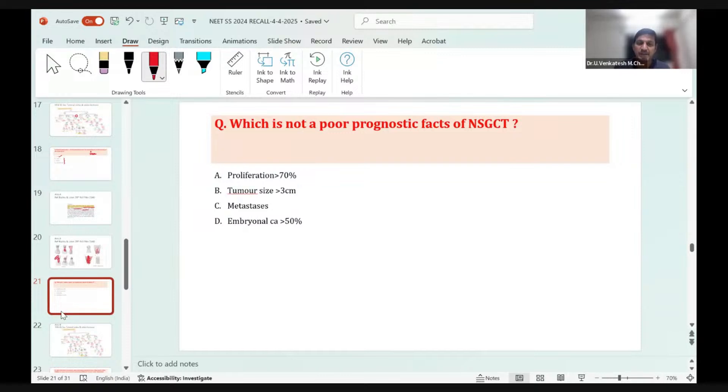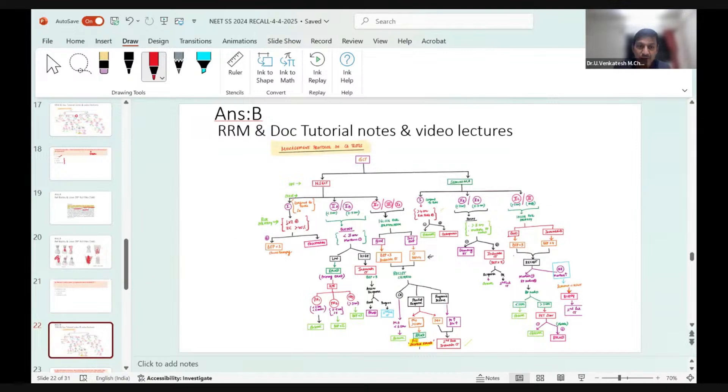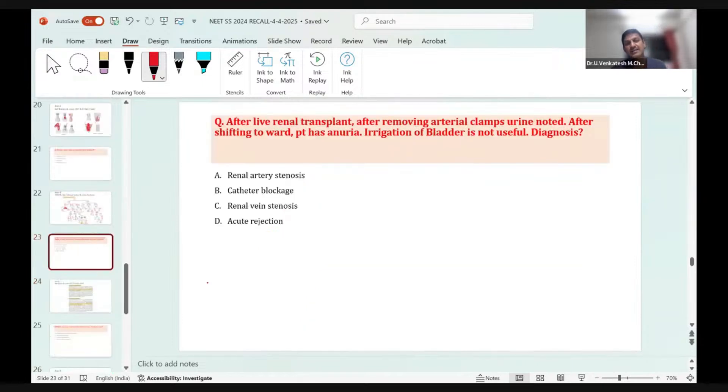Which of the following is not a poor prognostic factor for non-seminomatous germ cell tumor? Options: proliferation more than 70%, tumor size more than 3 centimeters, presence of metastasis, and embryonal component more than 50%. I didn't get a direct reference but taught this in class. In T stage of testicular tumor, the stage doesn't depend on the size of the primary tumor. It depends on the depth of invasion. Size of the testicular mass per se is not an effective prognostic factor, whereas size of nodes affects prognosis. Poor prognostic factors include lymphovascular invasion, embryonal cell component more than 40%, and metastasis.